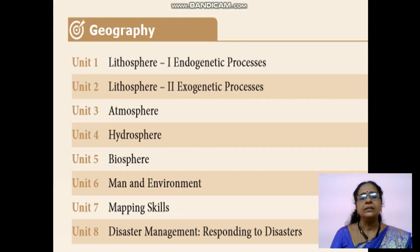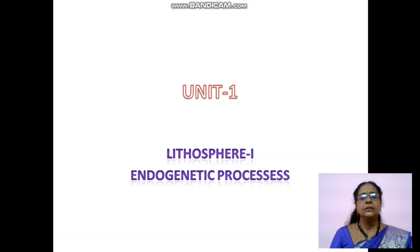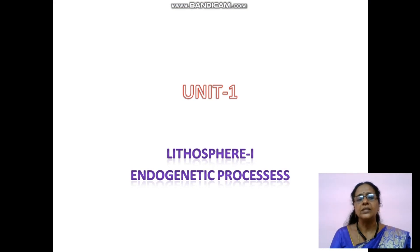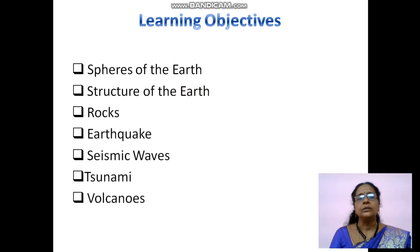In this geography portion there are 8 units: lithosphere 1 endogenic processes, lithosphere 2 exogenic processes, atmosphere, hydrosphere, biosphere, man and environment, mapping skills, disaster management, and responding to disaster. Today we learn about unit 1 - lithosphere 1 endogenic processes. There are 7 topics. Students, please listen carefully and take notes.